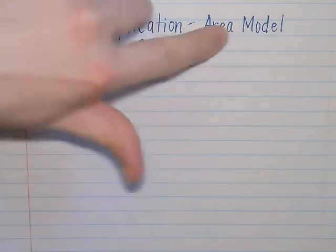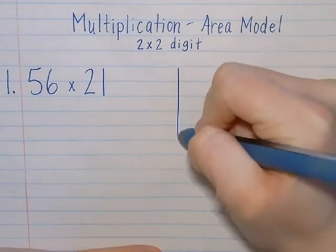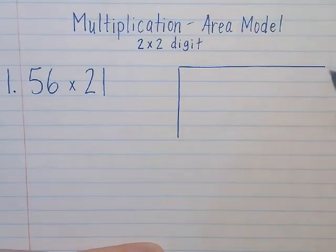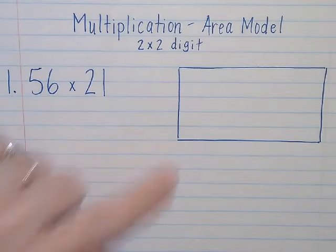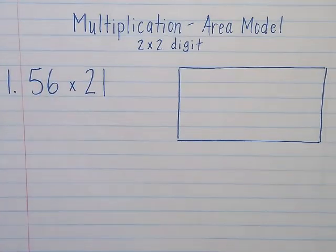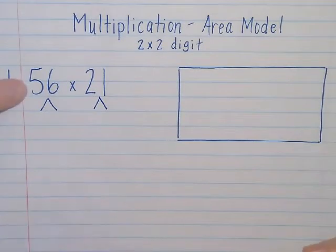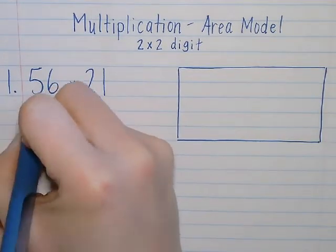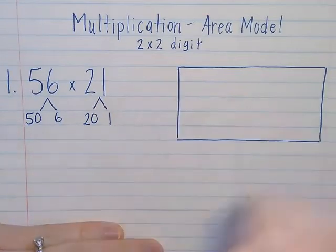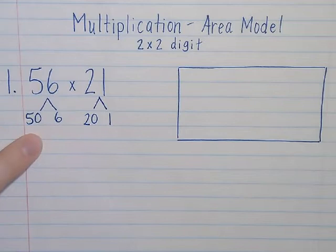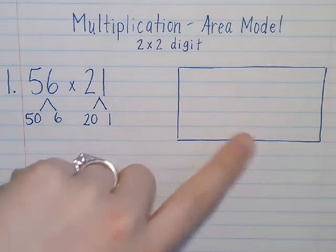My first step, before I can even draw the area model, is to figure out how many rectangles am I going to need within my larger rectangle. In order to know that, I need to know the different parts that make up this multiplication problem. If I split up each number by the place value, I know that 56 is represented by 50 and 6, and 21 is represented by 20 and 1. If I counted up the total numbers here, 1, 2, 3, 4, that tells me that I need 4 sections in my area model.